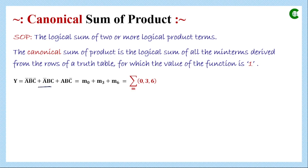Each variable in each minterm is either in original form or in complemented form. In the second format, the logical function is represented by its corresponding minterm numbers, and since this is sum of product, we have the summation sign. In the third format it is the compact form where we represent only by the corresponding decimal numbers.